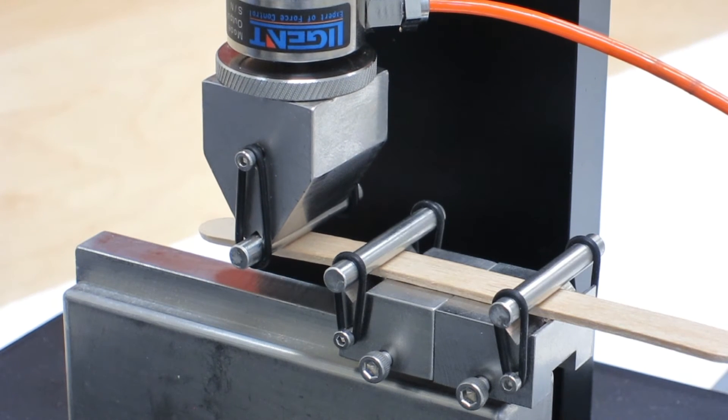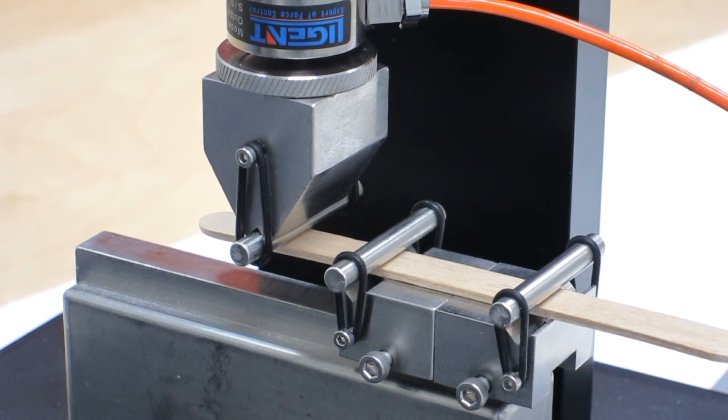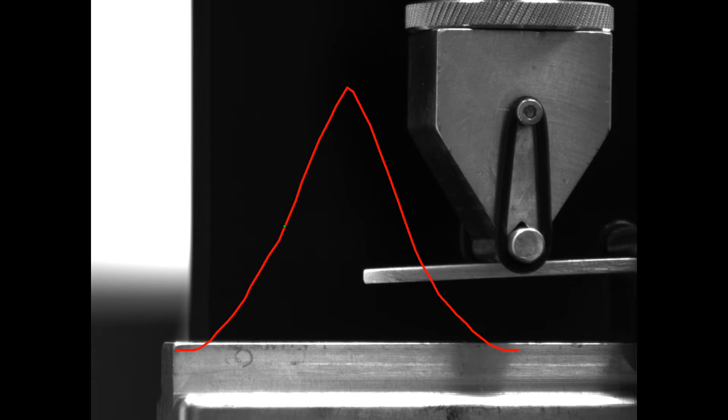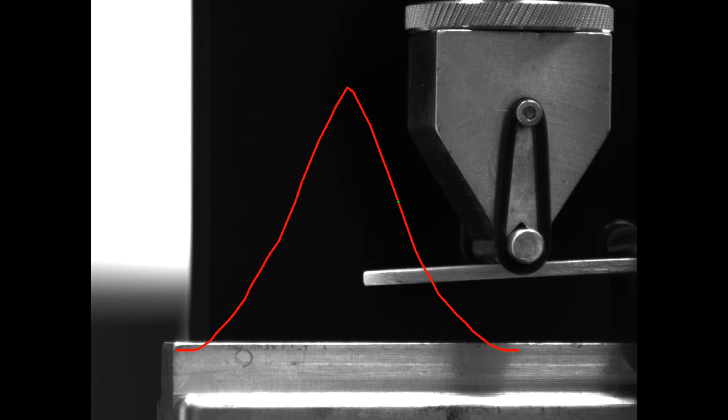Let's take a look at one final test mode. Here we're seeing a cantilever bend test on a popsicle stick. The force is about 30 newtons and the displacement is about 2 millimeters.